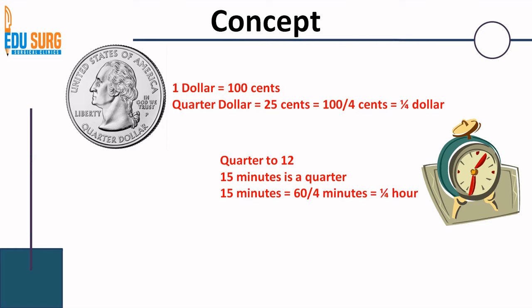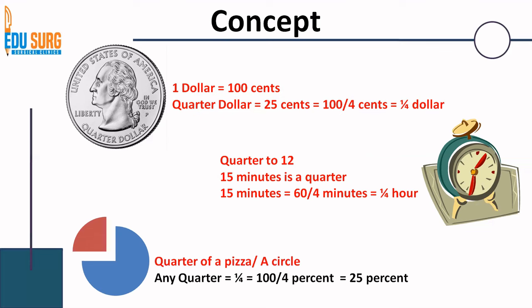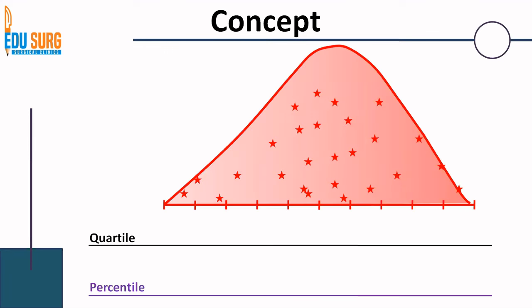For any data, if you take the total number of samples and divide it by 4, you get a quarter. Similarly, a quarter of a pizza, pie chart, or circle is 100 by 4, or one-fourth, that is 25%. So 25% is a quarter. Quartile and percentile are derived from these terms, and these are very common routine life scenarios. This is how these terms are derived.